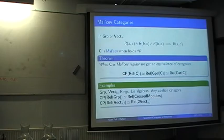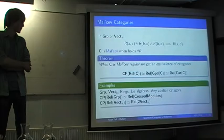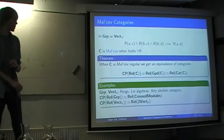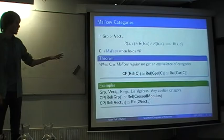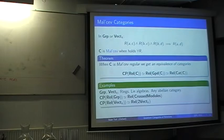Some examples of Malcev categories: groups, vector spaces, lots of categories of algebras like rings and Lie algebras, and any abelian category. For the theorem, the internal groupoids in Group are crossed modules — well-known in homotopy theory — and in vector spaces we have 2-vector spaces. The group example does seem to be a bridge between concepts from categorical quantum mechanics and homotopy theory, which is quite interesting.